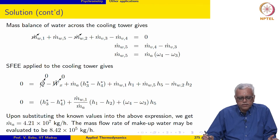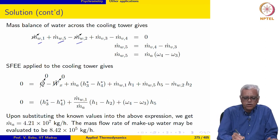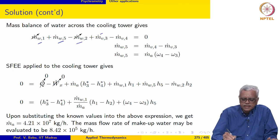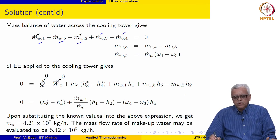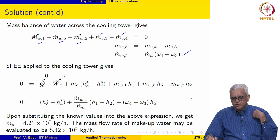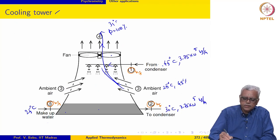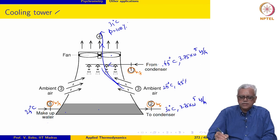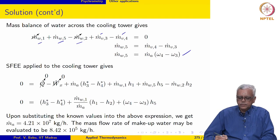Mass balance of water across the cooling tower: liquid water comes in at states 1 and 2 with the same mass flow rates, so those terms cancel. Makeup water comes in at state 5, water enters as vapor at state 3 through ambient air, and water leaves as vapor through the top at state 4. Rearranging gives m-dot-W5, the mass flow rate of makeup water, equal to m-dot-A times (omega-4 minus omega-3), where both omega-4 and omega-3 are known.